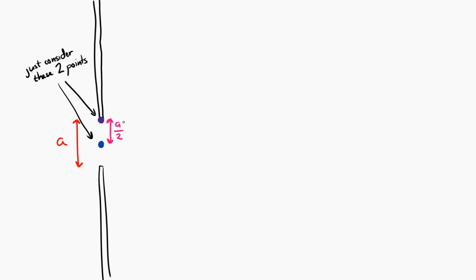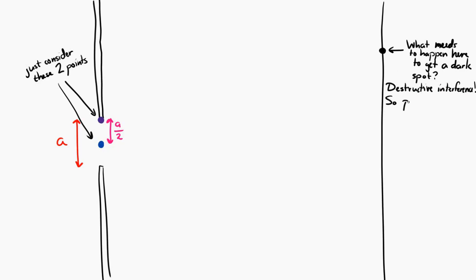And then let's think about what's happening over here on the screen. And I'm going to think about what needs to happen in order to get a dark spot on that screen. In order to get a dark spot there, the waves have to destructively interfere. And if they destructively interfere, then the path difference at that point has to equal n plus 1 half times lambda. That was our condition for destructive interference way back when.